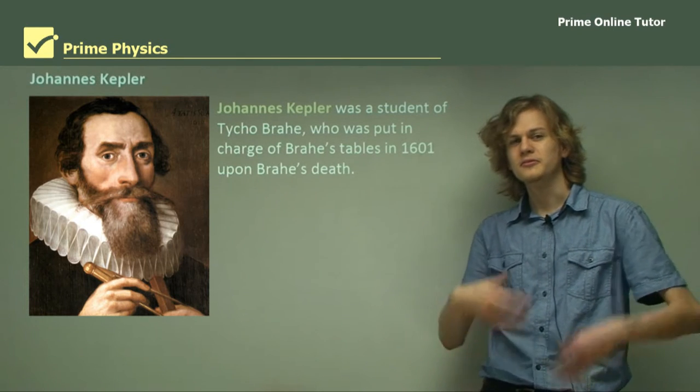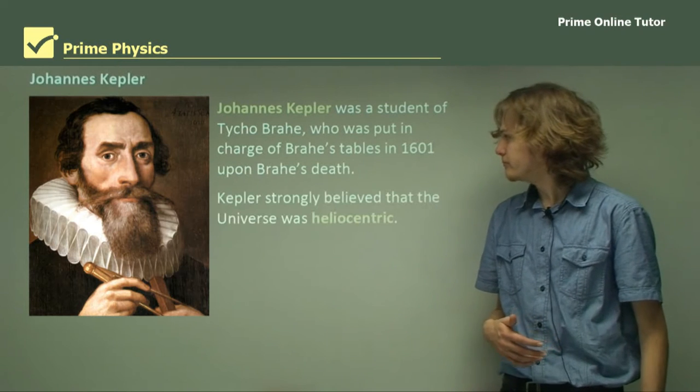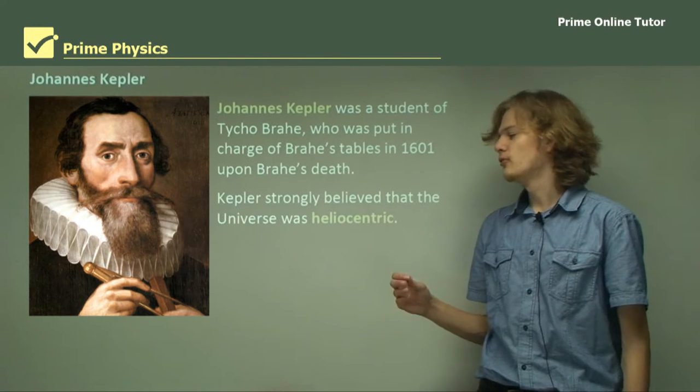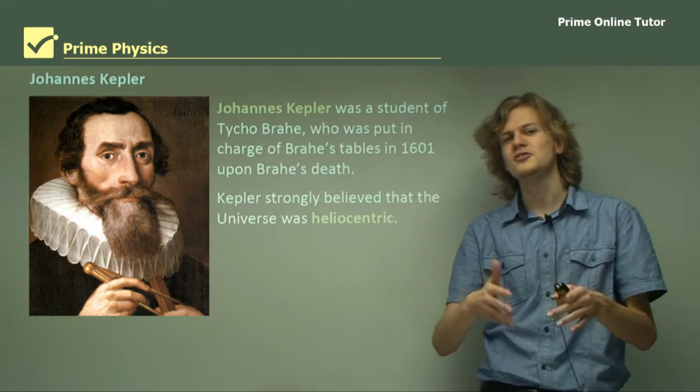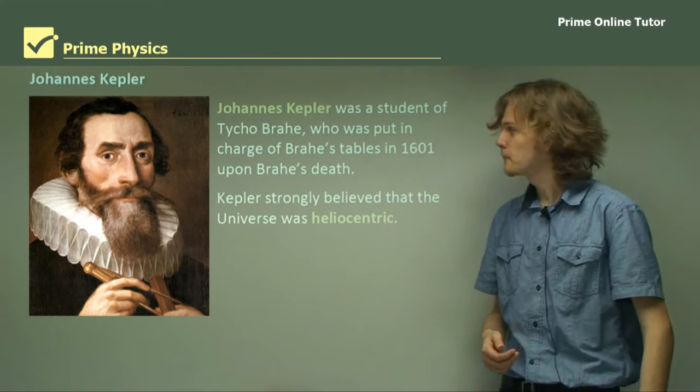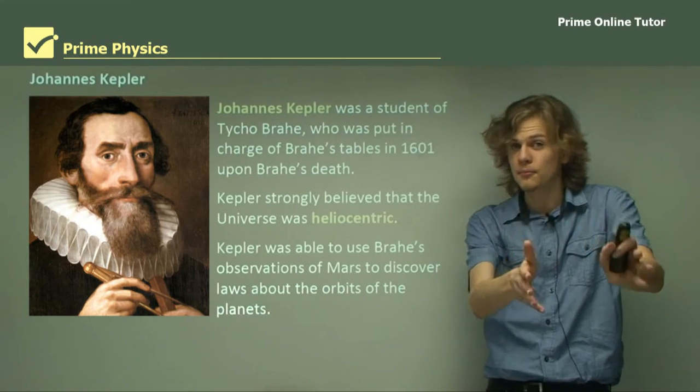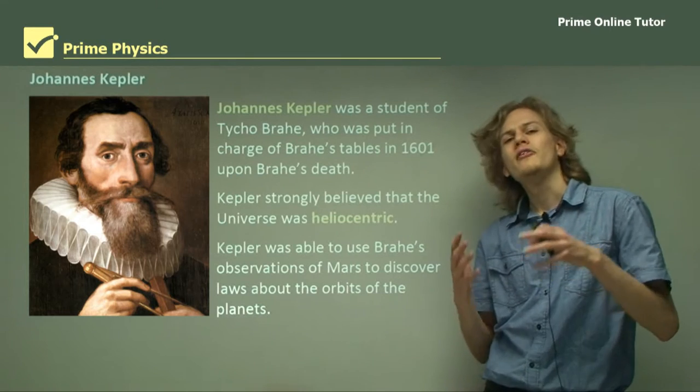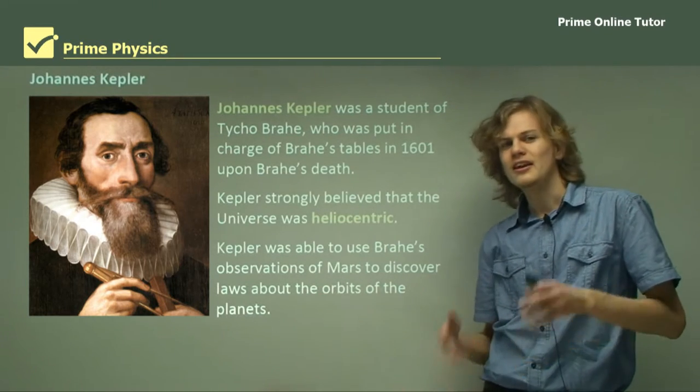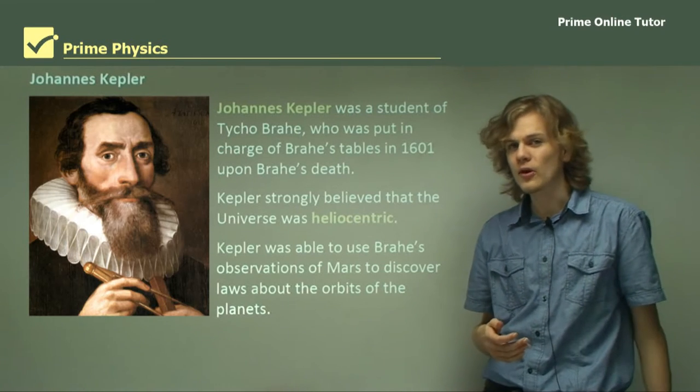Given this huge store of astronomical data, he decided to do something with it. Kepler strongly believed that the universe was heliocentric. He was a Copernican. Kepler was able to use Brahe's observations, particularly of the planet Mars, to make observations and laws about the orbits of the planets. The laws aren't something that he made up, it's something that he observed and decided to describe with mathematical equations.